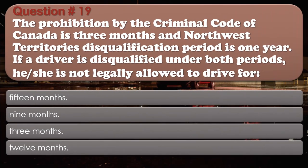Question number 19. The prohibition by the Criminal Code of Canada is 3 months and the Northwest Territory's disqualification period is 1 year. If a driver is disqualified under both periods, he or she is not legally allowed to drive for: 15 months. 9 months. 3 months. 12 months. The correct answer is: 12 months.